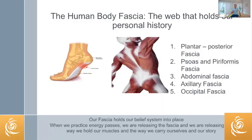There are different fasciae that we want to emphasize: the plantar fascia, very important because it's how we connect to the earth and information comes from the earth. We have the psoas and piriformis fascia on the glutes, all the structure of the pelvis. Then we have the abdominal fascia, the axillary fascia — which holds a combination of our secrets and personal history, our immune response — and the occipital fascia, with how we transmit tension and stressors from our experience of life into our neck and head.